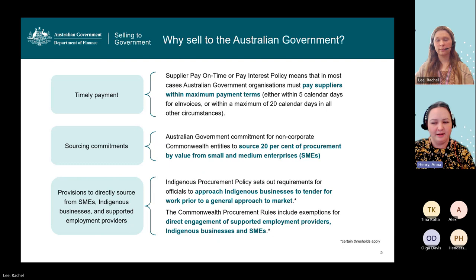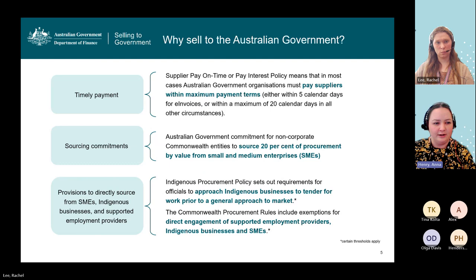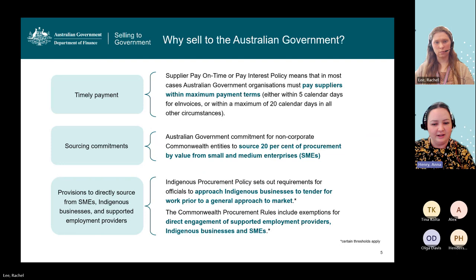Our supplier pay-on-time or pay-interest policy means that in most cases, Australian Government organisations must pay suppliers within maximum payment terms — within five calendar days for e-invoices or within 20 calendar days in all other circumstances. We also have commitments for non-corporate Commonwealth entities to source 20% of procurement by value from SMEs. Provisions via the Indigenous procurement policy also require officials to approach Indigenous businesses to tender for work prior to a general approach to market, and the Commonwealth procurement rules include exemptions for direct engagement of supported employers, Indigenous businesses, and SMEs.